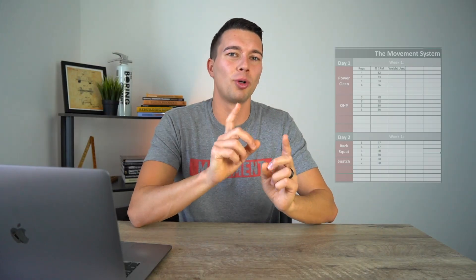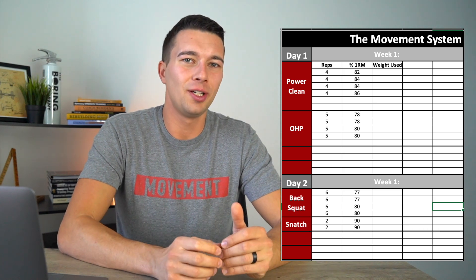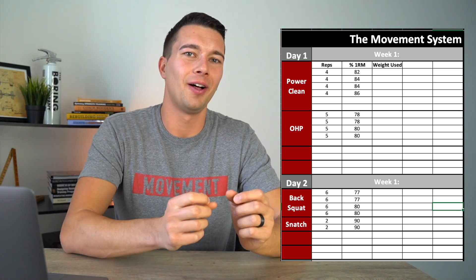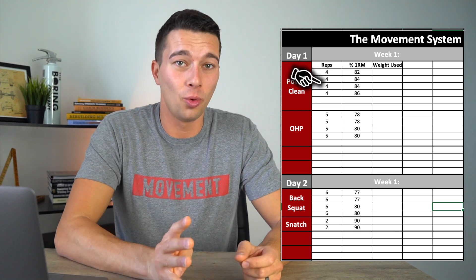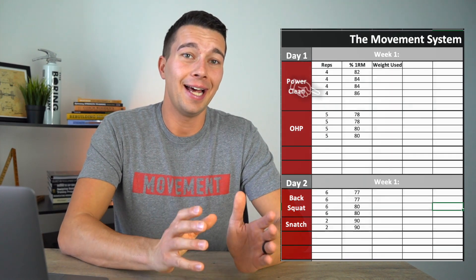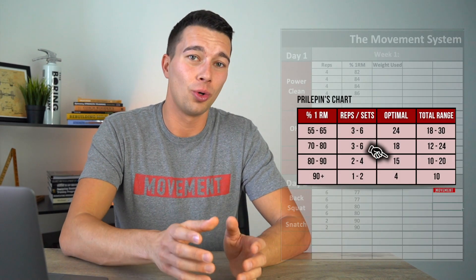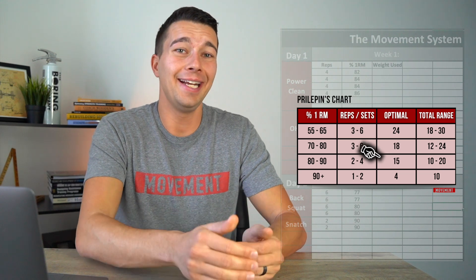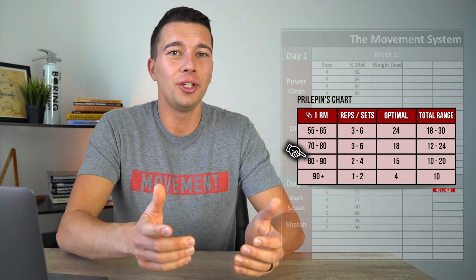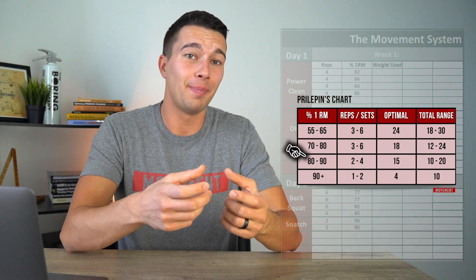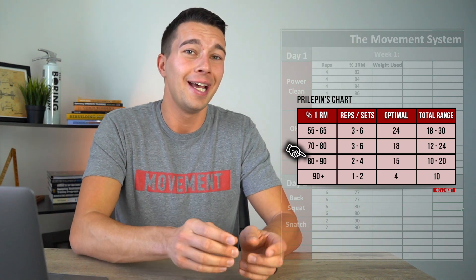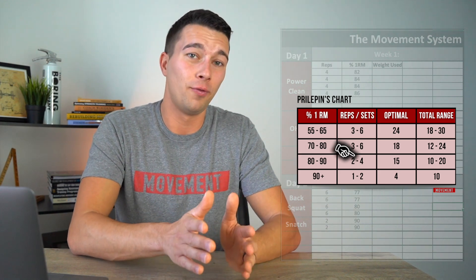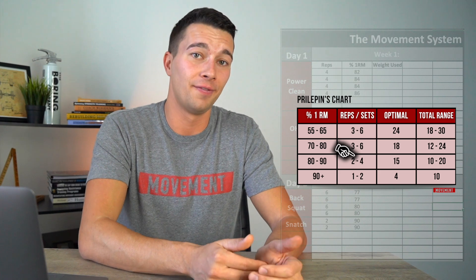Let's look at a simple program example. For power cleans, say you're working with a field sport athlete who wants to develop power and you program four sets of four. That volume is around 16 total reps, so we want to be in that 80 to 90% range. Alternatively, you could start by targeting the 80% range and look at the chart for two to four sets of two to four reps, then choose four sets of four.